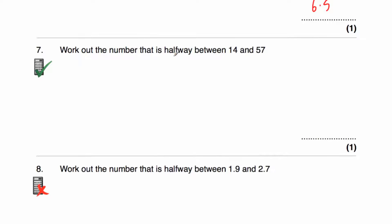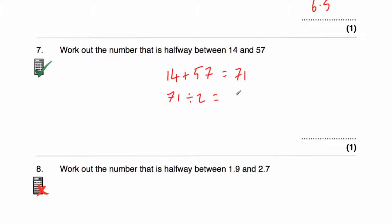Question seven says: work out the number that's halfway between 14 and 57. Again I can see one's odd and one's even so it's going to be a 0.5. So 14 plus 57 is equal to 71. This is a calculator question, so we can do 71 divided by 2, and when we do that we get 35.5. So the number halfway between 14 and 57 is 35.5.